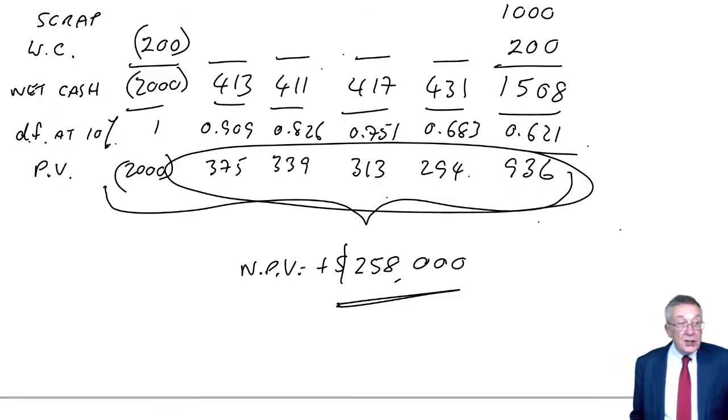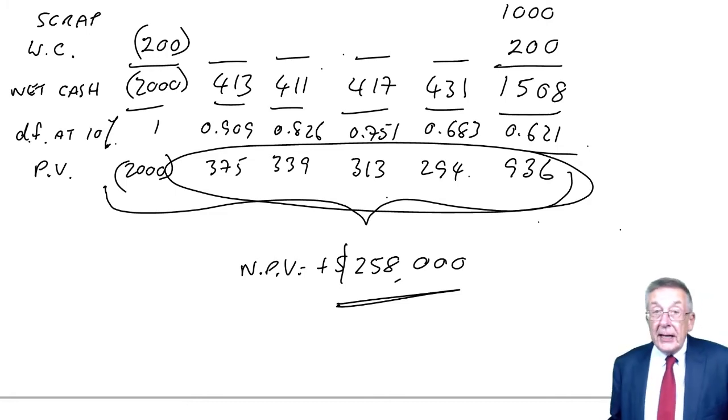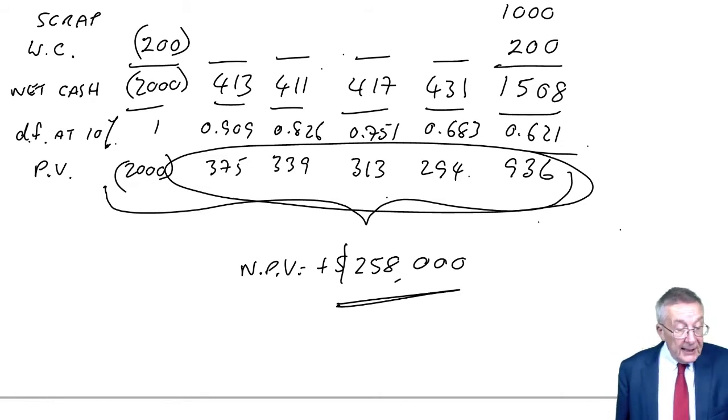This is the second lecture on discounted cash flow techniques. I said at the end of the last lecture when we'd worked out the net present value for example one, to keep hold of the figures because we're going to do something else on it. If you look at the next bit of the lecture notes, it talks about the internal rate of return.